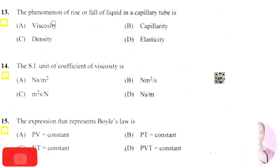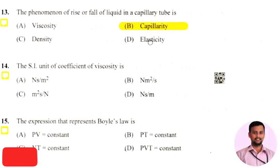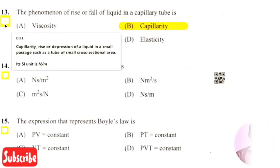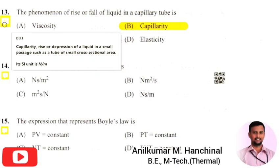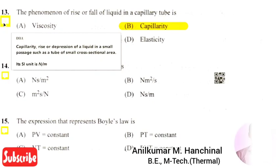The next question: the phenomenon of rise or fall of a liquid in a capillary tube is — the right answer is option 2, that is capillarity. Capillarity is the rise or depression of a liquid in a small passage such as a tube of small cross-sectional area. Its SI unit is Newton per meter.